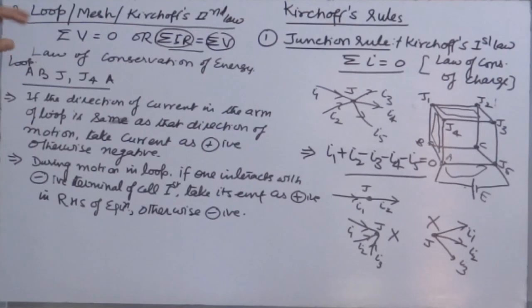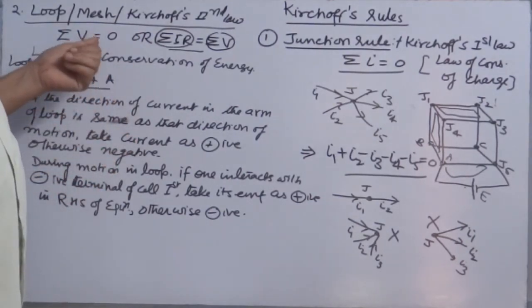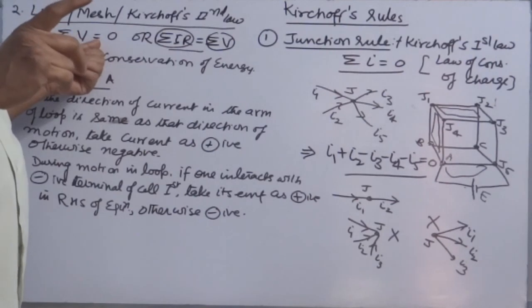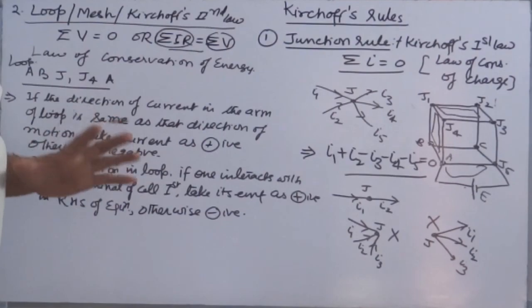Each loop selected, selection of each loop will give you one algebraic equation. So in which problem, how many loops will you choose? You will find the variables. Because algebraic method says, as many unknown variables you have, these many algebraic equations you need. And I repeat it again: usage of one loop, or applying loop rule in one loop, will give you only one algebraic equation.